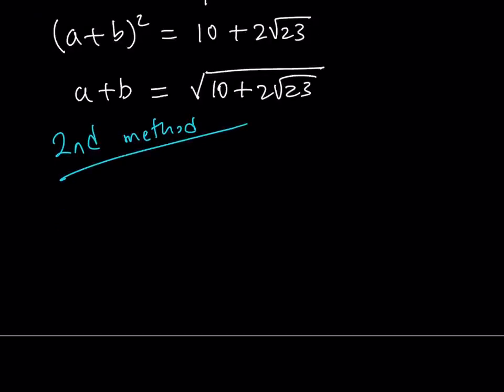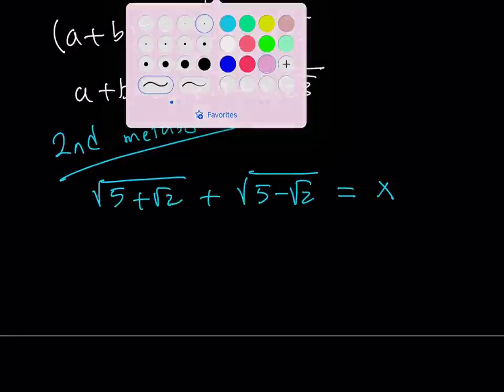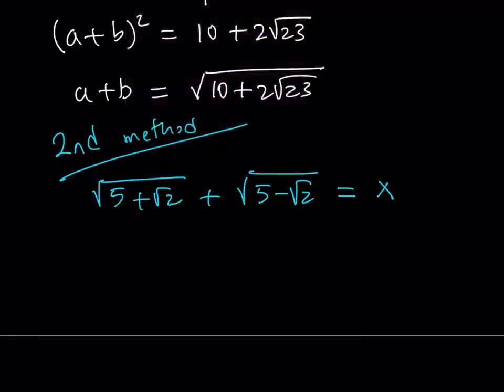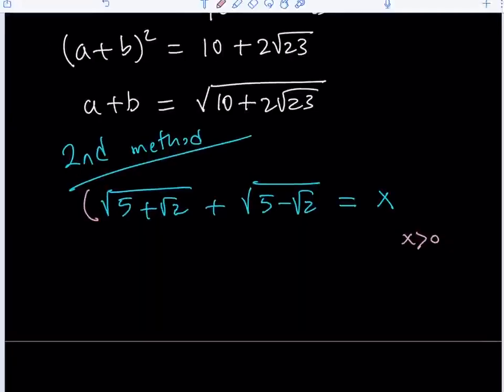Now, the second method, again, we're trying to evaluate this expression: square root of 5 plus root 2 plus the square root of 5 minus root 2. Since we're trying to evaluate it, and we don't know what it is, let's call it x. x is unknown. Now, again, x is positive here. Let's remember that all the time. And, we're going to square both sides.